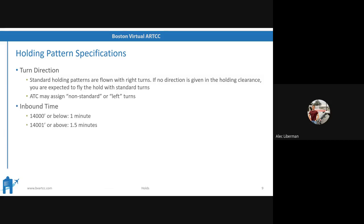Inbound leg time: you're aiming for a one-minute inbound leg — from wings level to wings level. Below 14,000 feet it should be one minute; above 14,000 feet, one and a half minutes. And then speed limits for the whole hold: below 6,000 feet, 200 knots or lower; 6,000 to 14,000 feet, 230 knots is your limit; above 14,000 feet, no more than 265 knots.